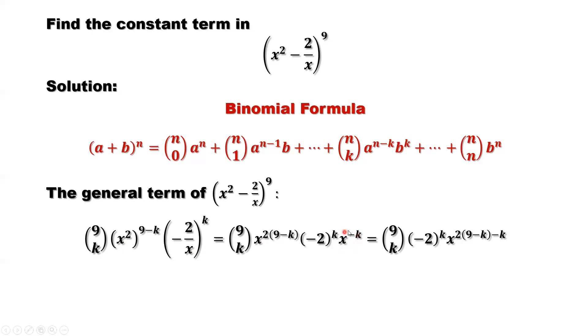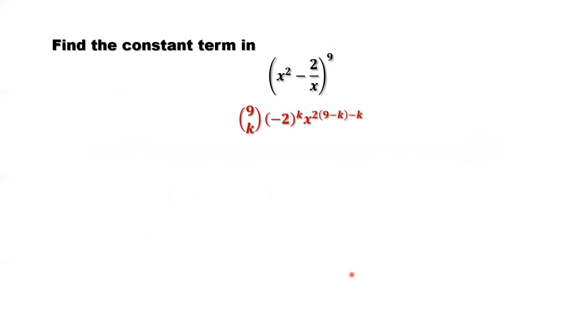We can put x terms together. The important part is the next step. This is the general term. We want to find the constant term. Constant term, what does that mean? That means we don't have x here.